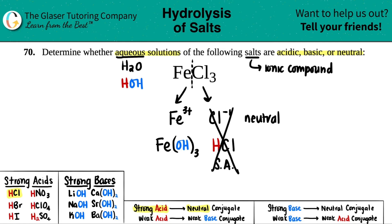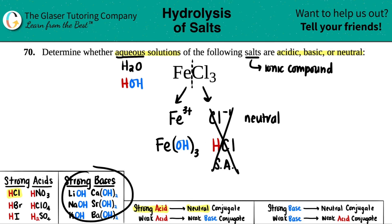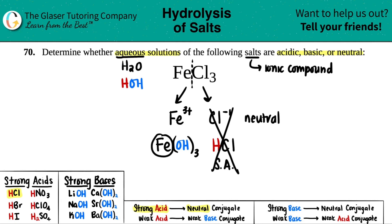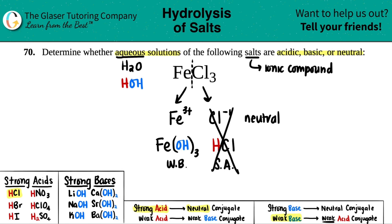Now for Fe(OH)₃ — is it one of your strong bases? No, it's not on the list. It's a transition metal, so we don't run into the group-one dilemma. In this case, we classify Fe(OH)₃ as a weak base.